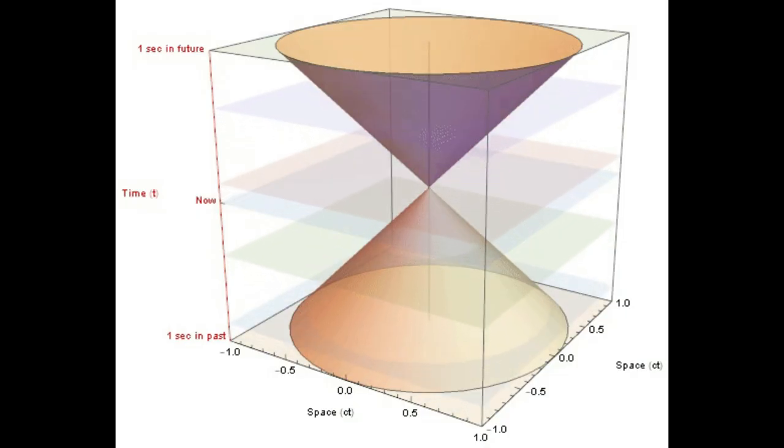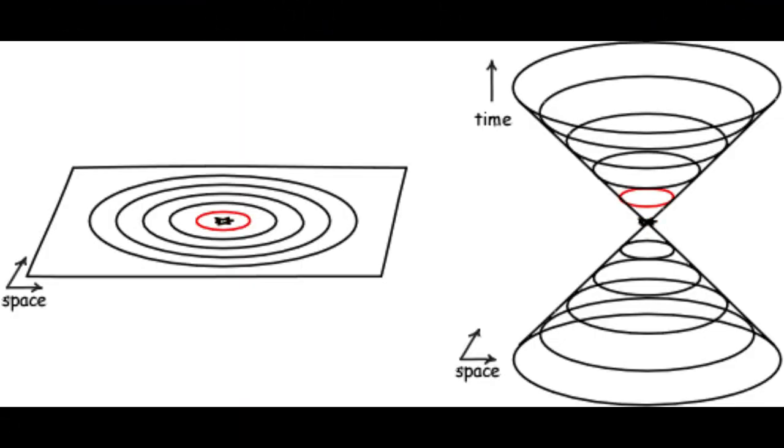At time equals zero, the event is like the tip of the cone. It represents the present moment. As time progresses, the influence of the event spreads outward in all directions at the speed of light. This means that after one second, the influence has reached a radius of one light second; after two seconds, it has reached a radius of two light seconds, and so on. When you connect all these points, it resembles a cone.